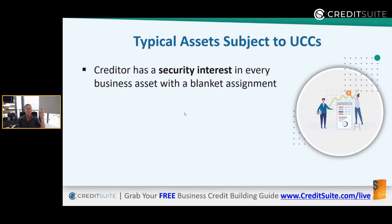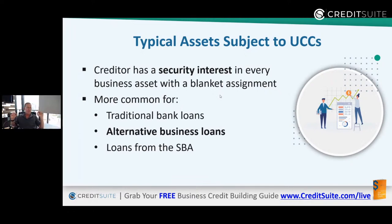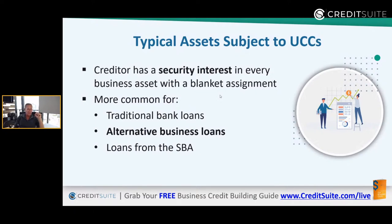With a blanket assignment, the creditor has a security interest in every business asset. This is more common for traditional bank loans, alternative business loans, and SBA loans. SBA's underwriting guidelines state that the bank needs to collateralize every asset the business has up to the loan amount, and if that's not enough, they go after all personal assets as well. Blanket assignments aren't uncommon if you don't have one asset worth what you're borrowing, or if it's considered a higher-risk situation.